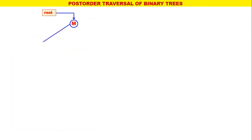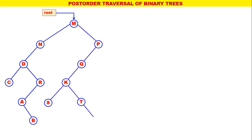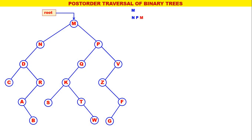Let us consider one more — a little bigger tree. This is a big binary tree. Let us find the post-order for this big binary tree. The root is M. The left child of M is N and the right child of M is P. Therefore, the post-order for M is N, P, M — with M processed. The leftmost blue is N. The post-order for N is D, N — with N processed. N is replaced by D, N with N processed.